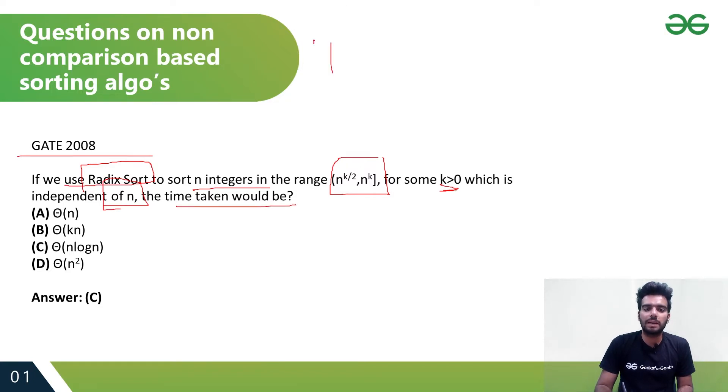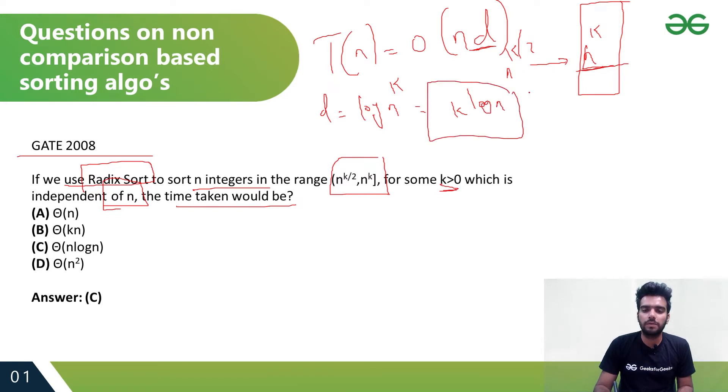If you remember, the time complexity for Radix Sort is O(n*d), where d is the number of digits in the largest value. So if the range is from n^(k/2) to n^k, the number of digits in the largest element will be log(n^k), which equals k*log(n).